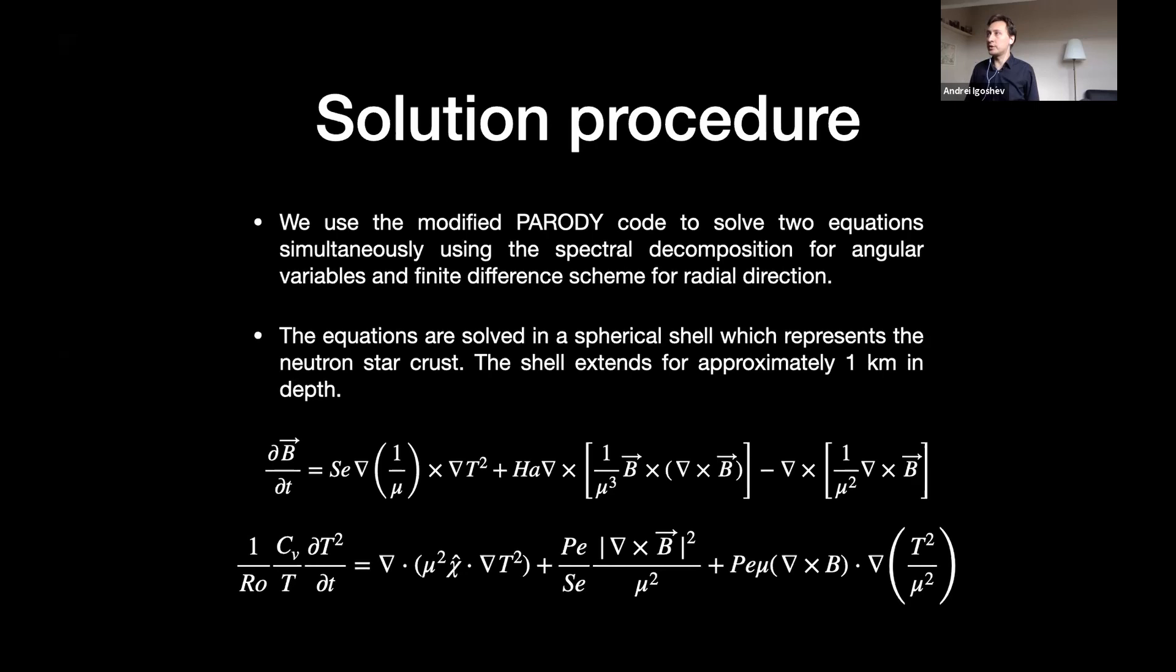Now, in my research, we solved these two coupled partial differential equations using PARODY code. It's spectral decomposition for angular variables and finite difference scheme for radial direction. The first equation is a magnetic induction equation. On the right-hand side, there are three terms. The last term is simply decay of the magnetic field due to the ohmic losses because the crust of the neutron star has a finite conductivity. The middle term is Hall evolution, which relates different components of the magnetic field—large scales with small scales and poloidal and toroidal components together. The first term is a Biermann battery, and it's usually quite a small term, so it could generate some additional magnetic field if there is externally imposed thermal gradient, for example, if there is a hot spot formed because of some magnetospheric currents. But in our simulations, it's a quite small term.